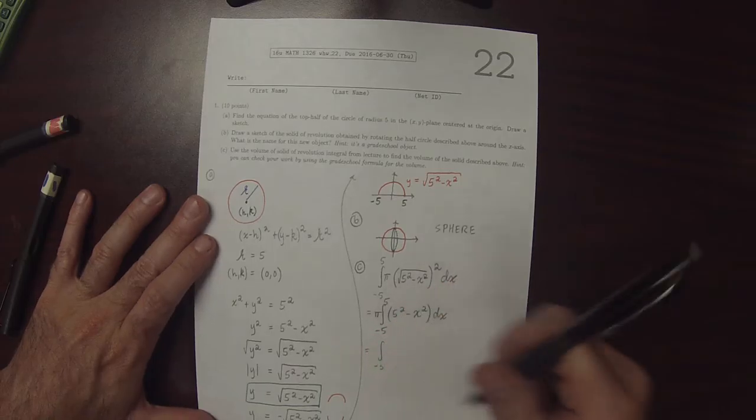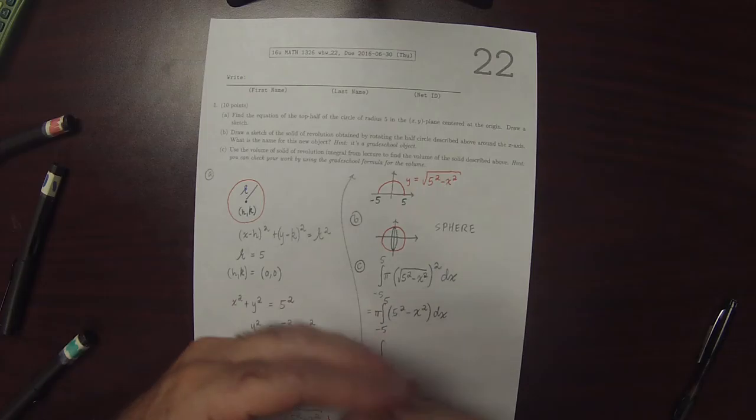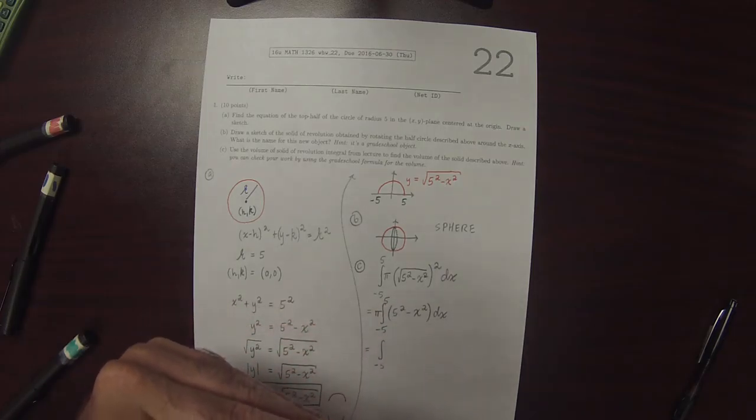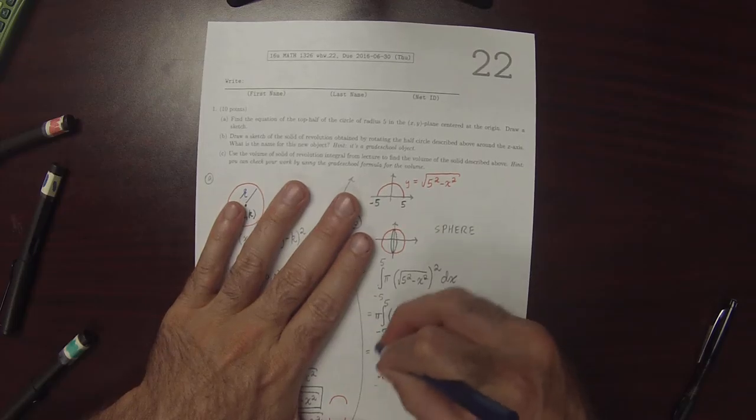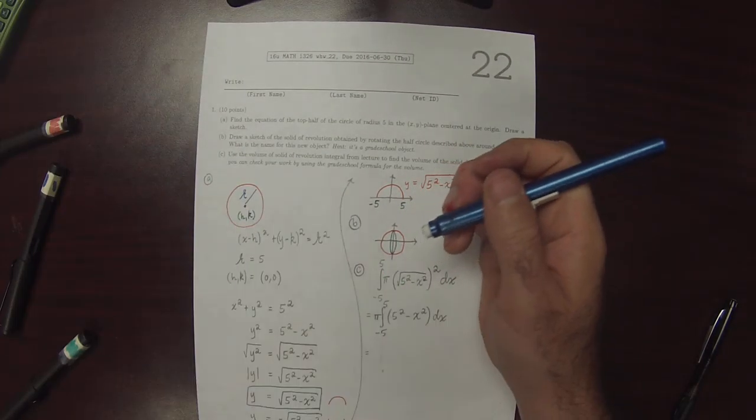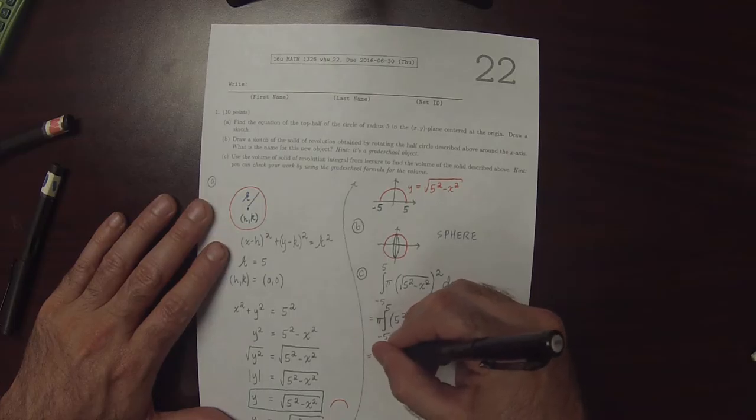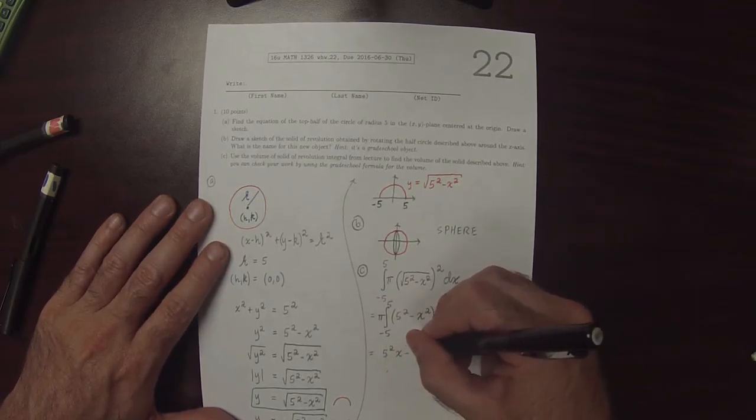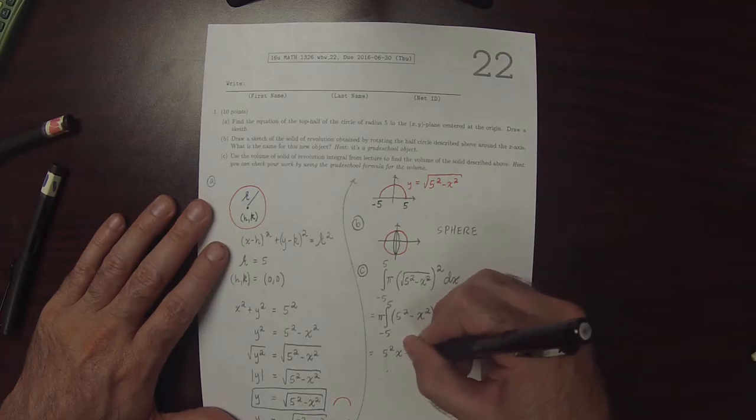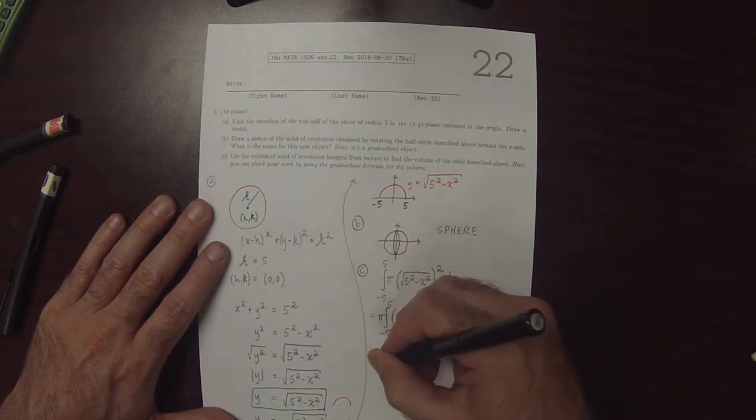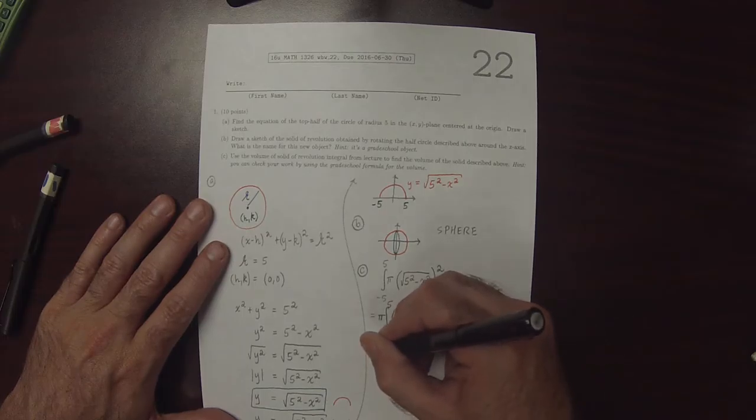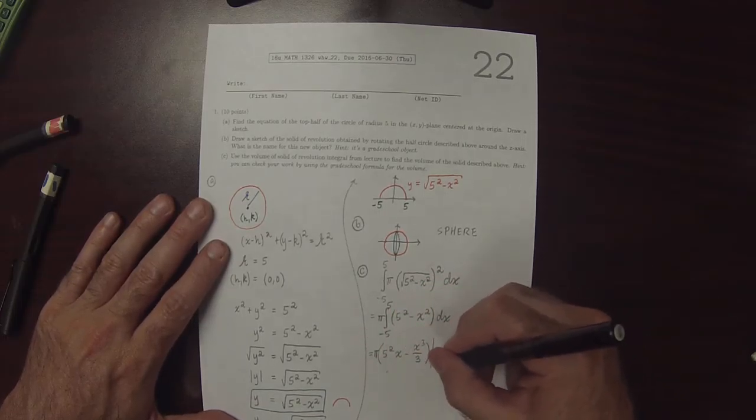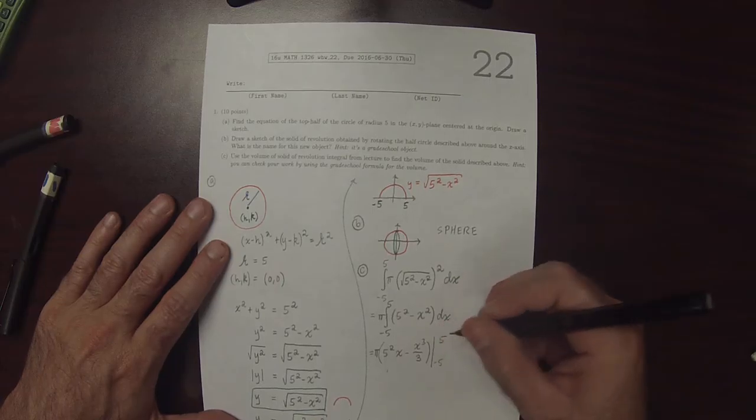So we're going to integrate it. So this would be 5 squared x minus x cubed over 3 pi evaluated from negative 5 to 5.